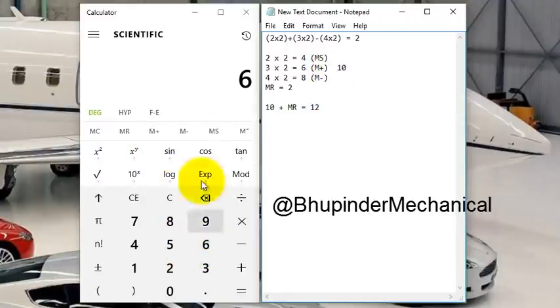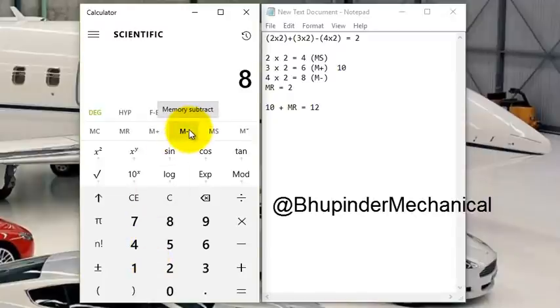And then what we've got to do is go to the next step, which is 4 times 2, which equals 8. Now we want to subtract 8 from the previous answer, so we use memory subtract. The answer should already be 2.